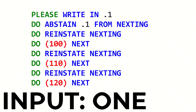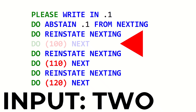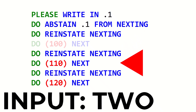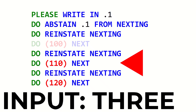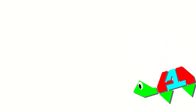If the player typed a 1, the program abstains once and does Label 100 next. If they typed a 2, the program will instead abstain twice, so it skips Label 100 and runs Label 110. Lastly, if the player typed a 3, it will abstain three times and run Label 120. I actually didn't know that this feature existed in Intercal when I made that FizzBuzz program a couple years ago — this feature would have been really helpful, but oh well.